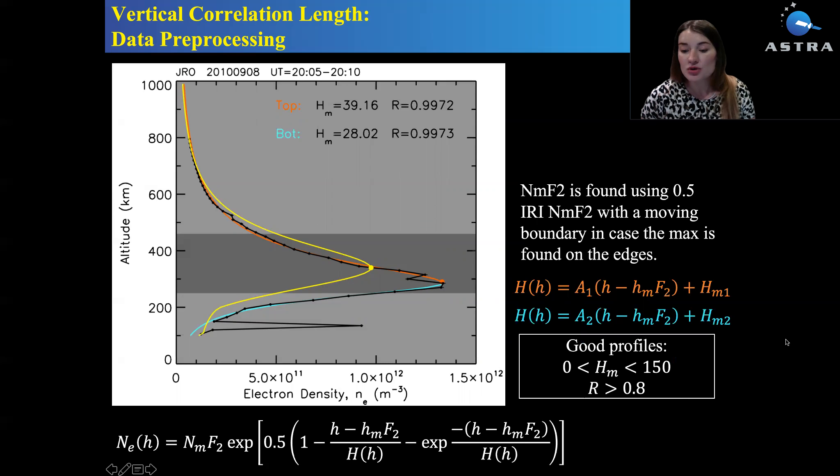After the peak is found, I would use the Chapman function to fit the top side and the bottom side and find the coefficients A1 and HM1 and A2 and HM2. I would use this criteria to determine whether the profile is good to use or no good. If the scale height HM is greater than zero and less than 150, and if the correlation between data points and the fitted ones are greater than 0.8, then I would use this profile further.